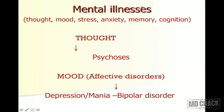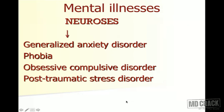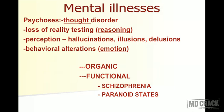In summary: thought disorders are called psychosis, and mood disorders are affective disorders — depression or mania (bipolar disease). Under neurosis, ground reality is intact, and illnesses include generalized anxiety disorder, phobia, obsessive compulsive disorder, and post-traumatic stress disorder. We now start the detailed discussion of psychosis.